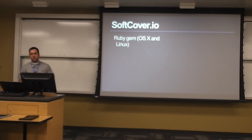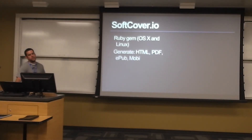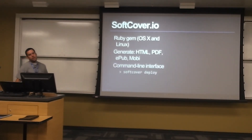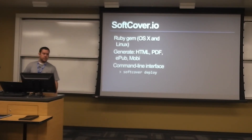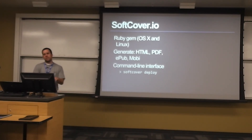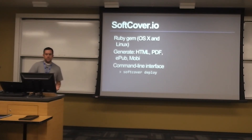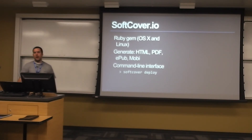It can generate HTML, PDF, EPUB, and MOBI. It's got a command-line interface — you read their documentation, type 'softcover build' and it builds your ebook. Give it more options and it'll build your HTML, PDF, or all of them. When you hit deploy, it actually pushes it up to softcover.io where it also acts as a store.